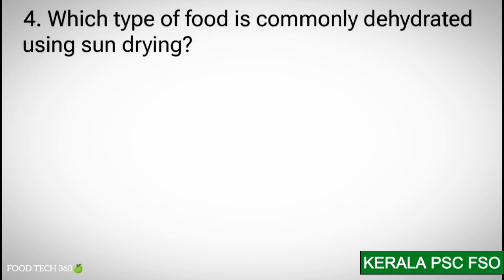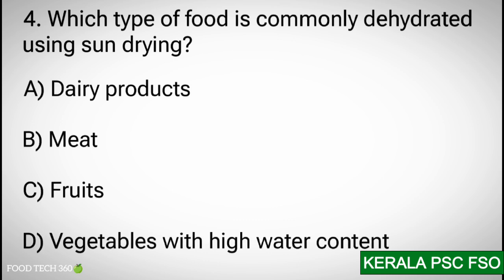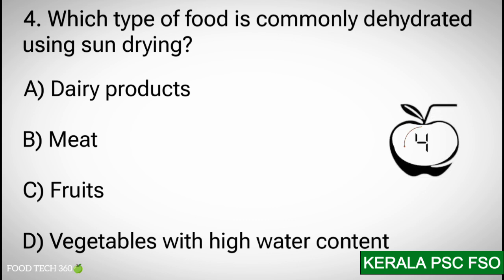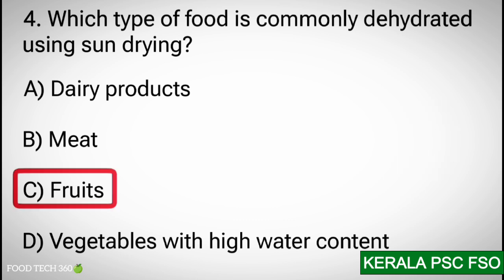Q4: Which type of food is commonly dehydrated using sun drying? Options: A. Dairy products. B. Meat. C. Fruits. D. Vegetables with high water content. Correct answer: C. Fruits.